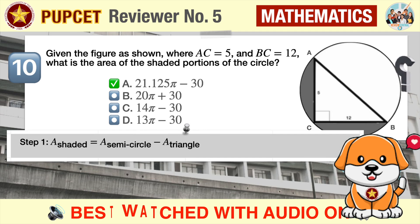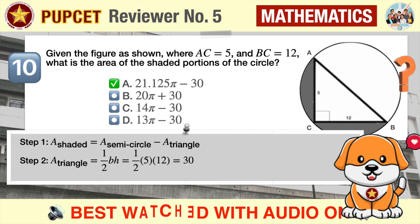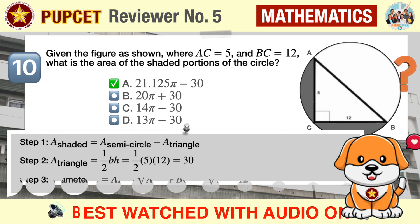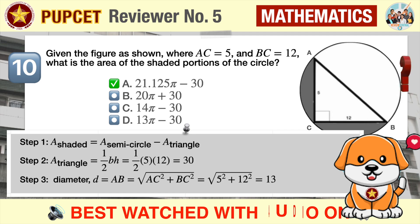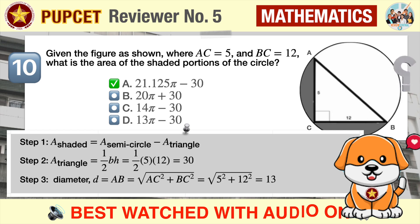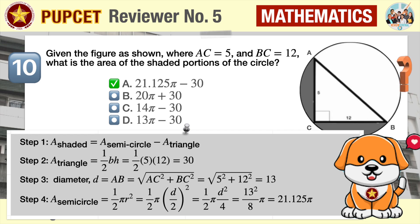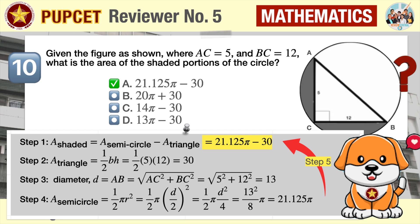The correct answer is A, 21.125π minus 30. The area of the shaded portions equals the area of the semicircle minus the area of the inscribed right triangle. The triangle has height 5 and base 12, so its area is 30 square units. The diameter of the circle is the hypotenuse AB of the right triangle. Using the Pythagorean formula, AB equals 13. The area of the semicircle is half the circle's area, giving 21.125π. Therefore, the area of the shaded portions is 21.125π minus 30.